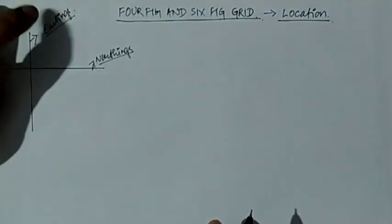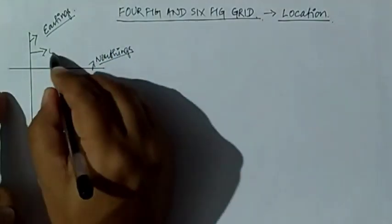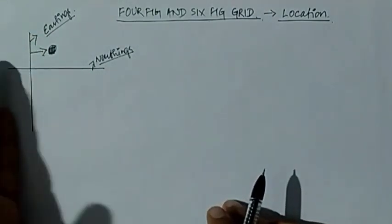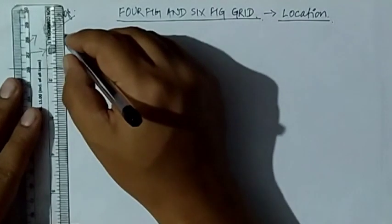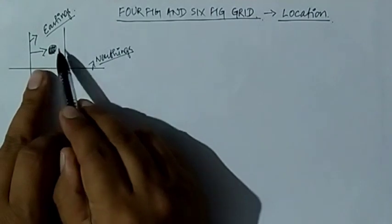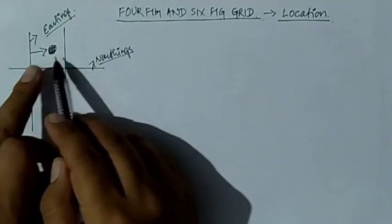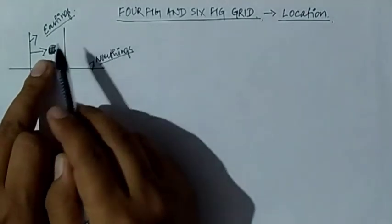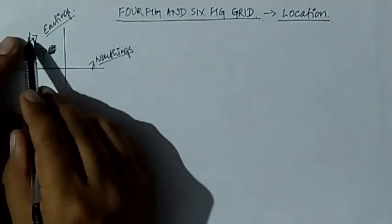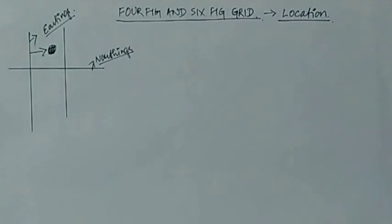Eastings will always represent the place towards its east. This line will always refer towards its east. For example, if a spot is present here, this line refers to it towards its east. If a spot is present to the west of a line, we cannot say that line's eastings represents it, because the spot is towards the west.